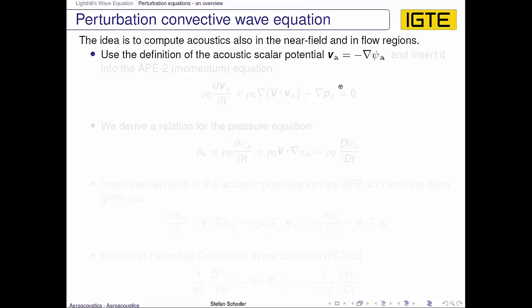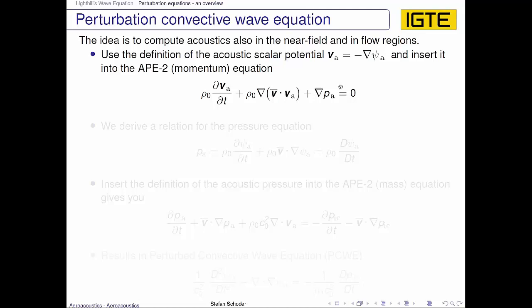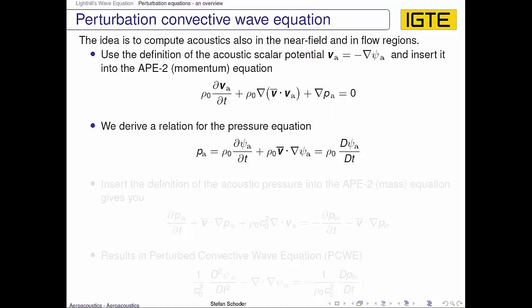We insert it into the APE-2 momentum equation, inserting the scalar potential there and then canceling the gradient term itself. We then derive a relation for the pressure equation — how the pressure is connected to the acoustic scalar potential. The pressure in this sense is connected by the substantial derivative, where the convective part regards the mean velocity. So the acoustics are convected with the mean velocity component.